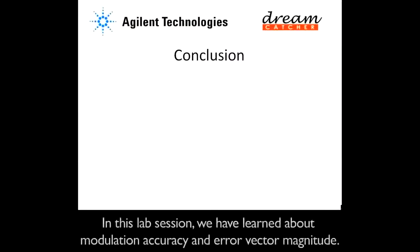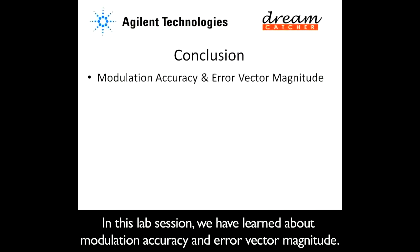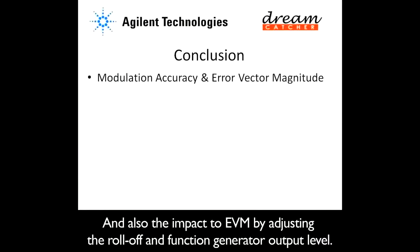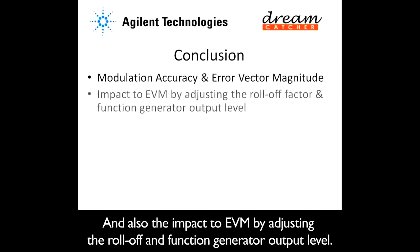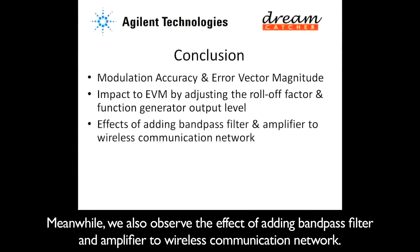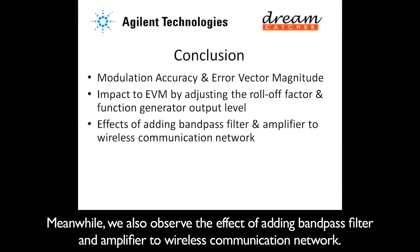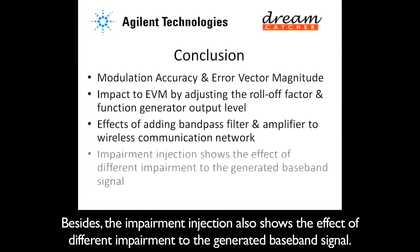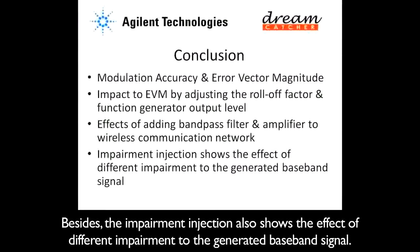In this lab session, we have learned about modulation accuracy and error vector magnitude, and also the impact of EVM by adjusting the roll-off factor and function generator output level. We have also observed the effect of adding a bandpass filter and amplifier to a wireless communication network. Additionally, the impairment injection demonstrated the effect of different impairments on the generated baseband signal.